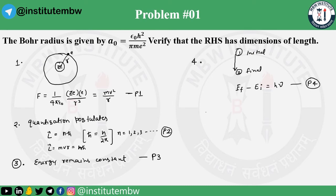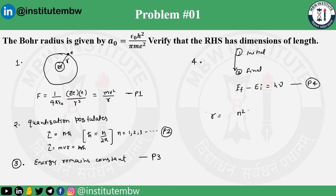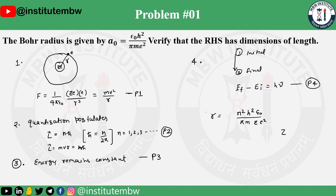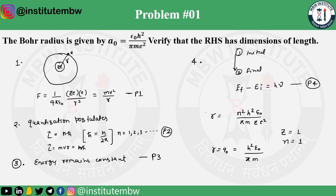Using these equations we can prove and show that r equals n²h²ε₀ over πmZe². Now for the hydrogen atom, Z equals 1, and for n equals 1, r equals a₀ — the Bohr radius — which equals h²ε₀ over πme². This is the formula we can derive using the Bohr postulates.